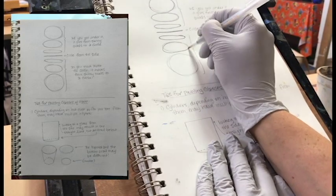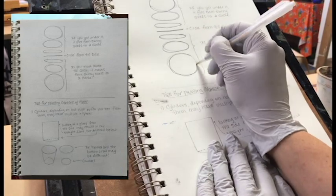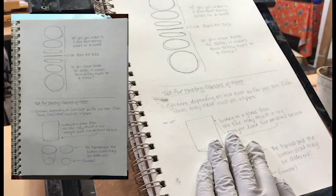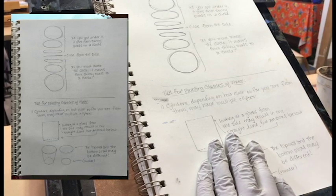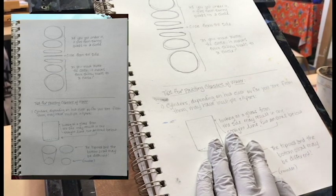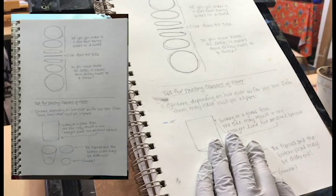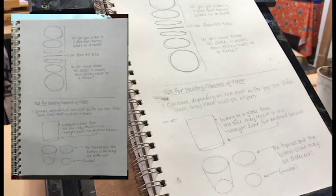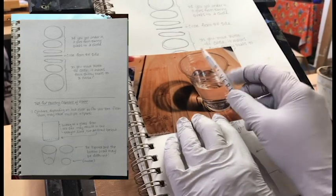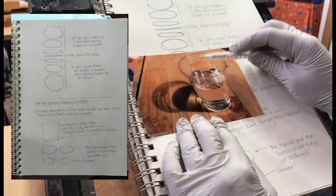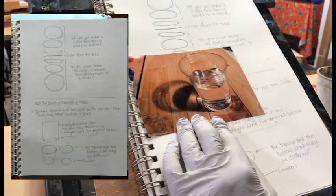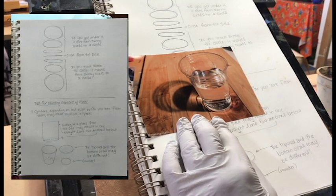And so the oval, again, as you go beneath it, gets bigger until it becomes a circle. Those relative sizes, how tall is it versus how wide it is, is what you look for when you're looking at a cup. That's how you can see whether it's a skinny oval or a big wide circle.